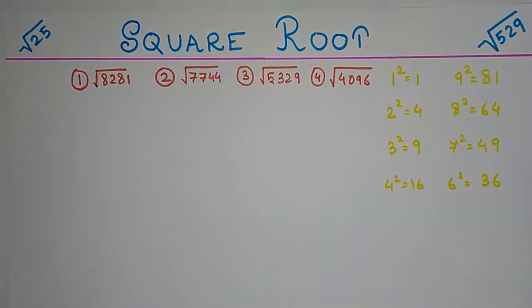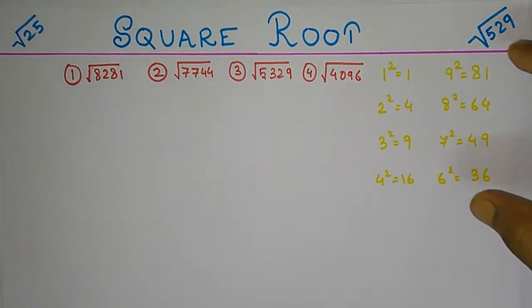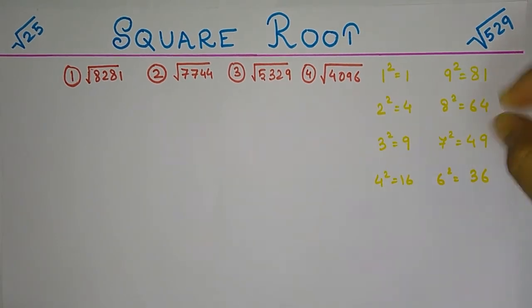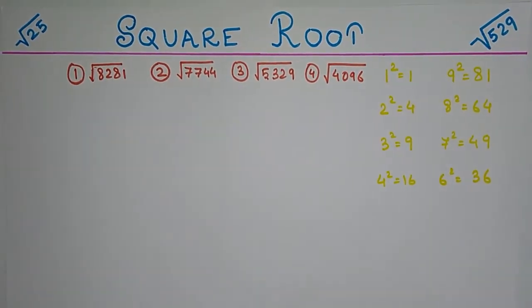Now there is no specific formula to find the square root of these numbers. The only thing you need to know is the square of these numbers: 1, 2, 3, 4, 5, 6, 8, and 9.